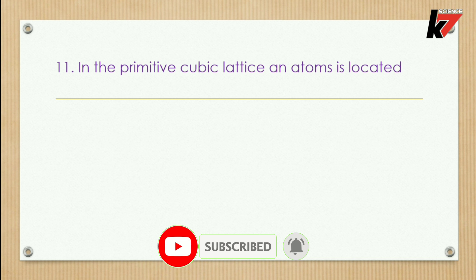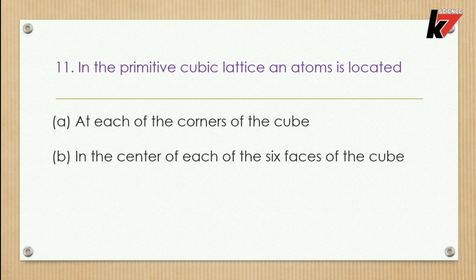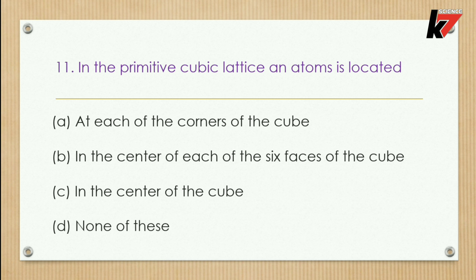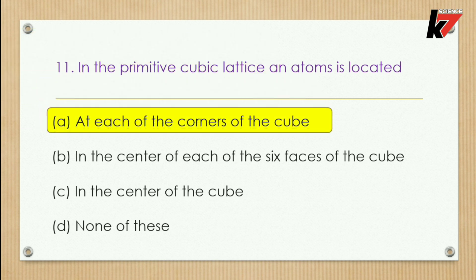Question 11: In a primitive cubic lattice, an atom is located — options: at the corners of the cube, at the center of the six faces, in the center of the cube, or none of these. The first option is correct. The center of six faces is the condition for FCC, and the center of the cube is the condition for BCC.